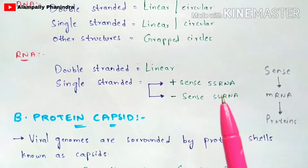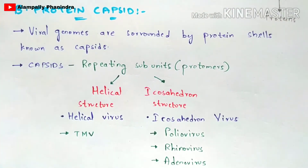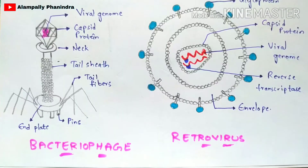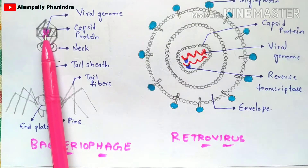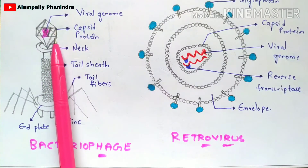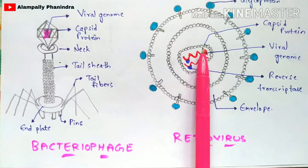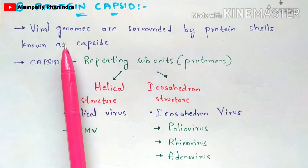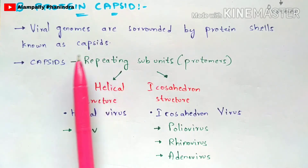Now let us discuss the protein capsid. Viral genomes are surrounded by protein shells called capsids. Looking at the diagram, the bacteriophage and retrovirus diagrams show the viral genome — indicated in pink — surrounded by capsid proteins. This is true for both the bacteriophage and the retrovirus.